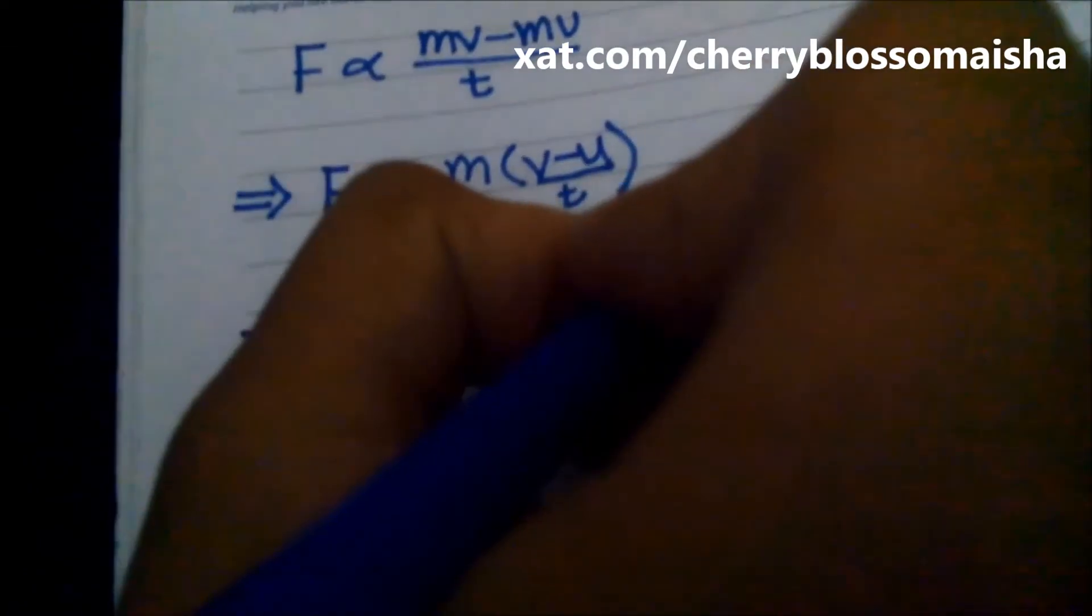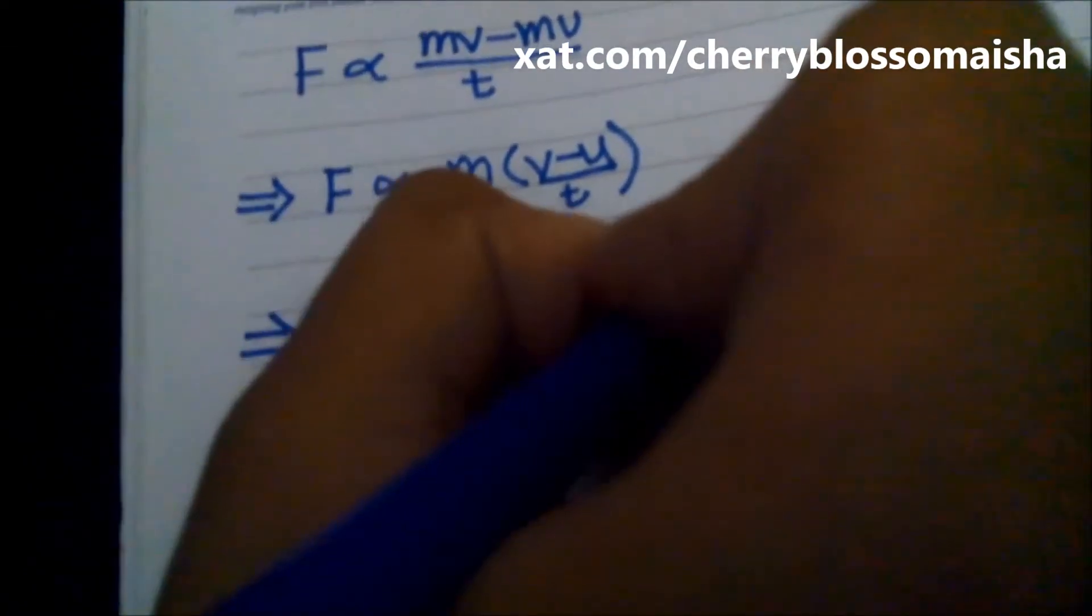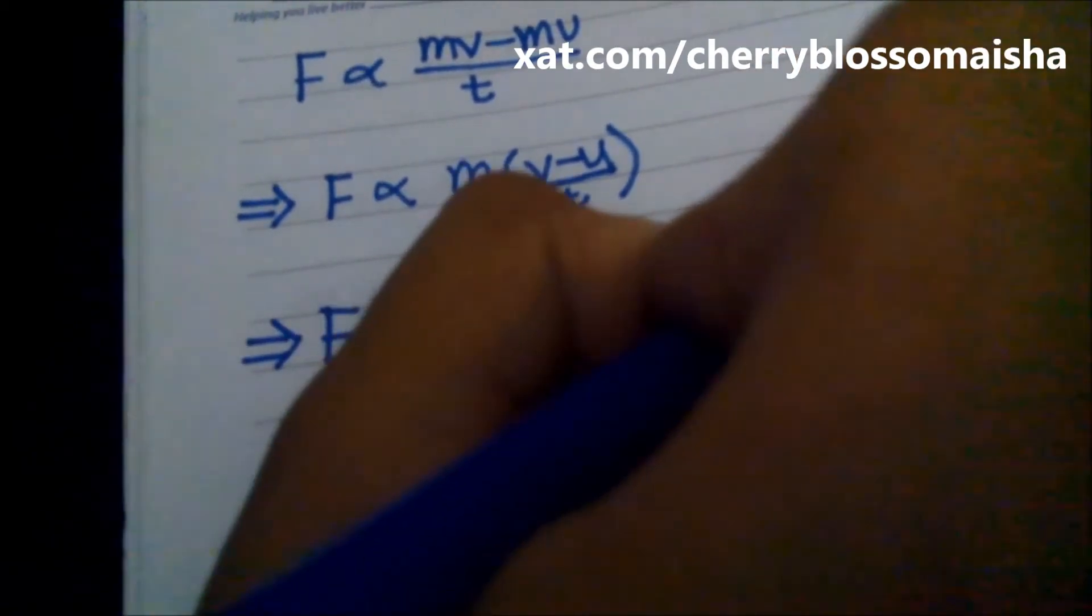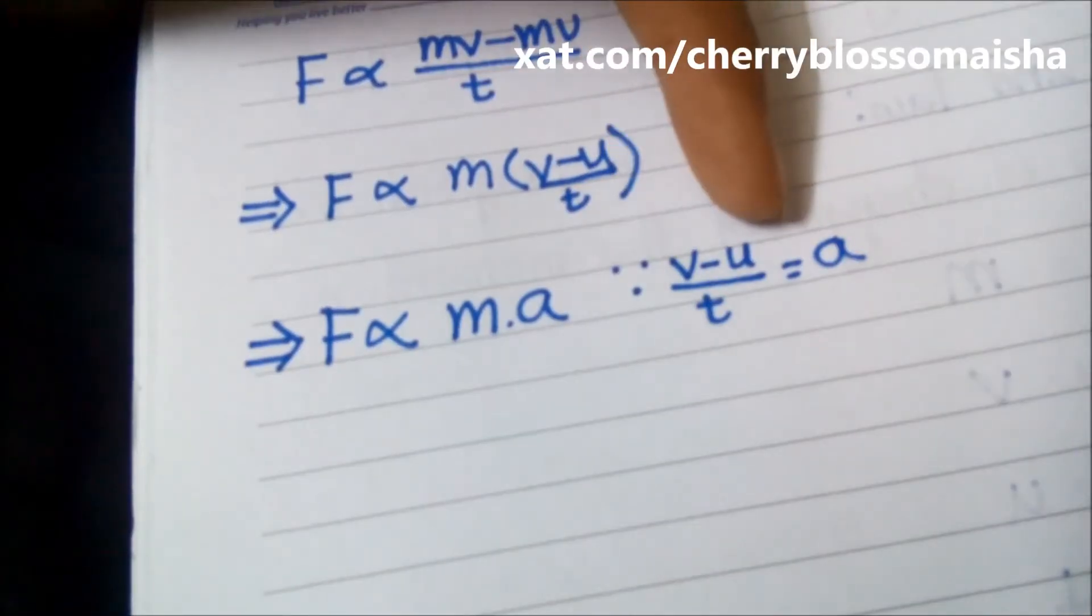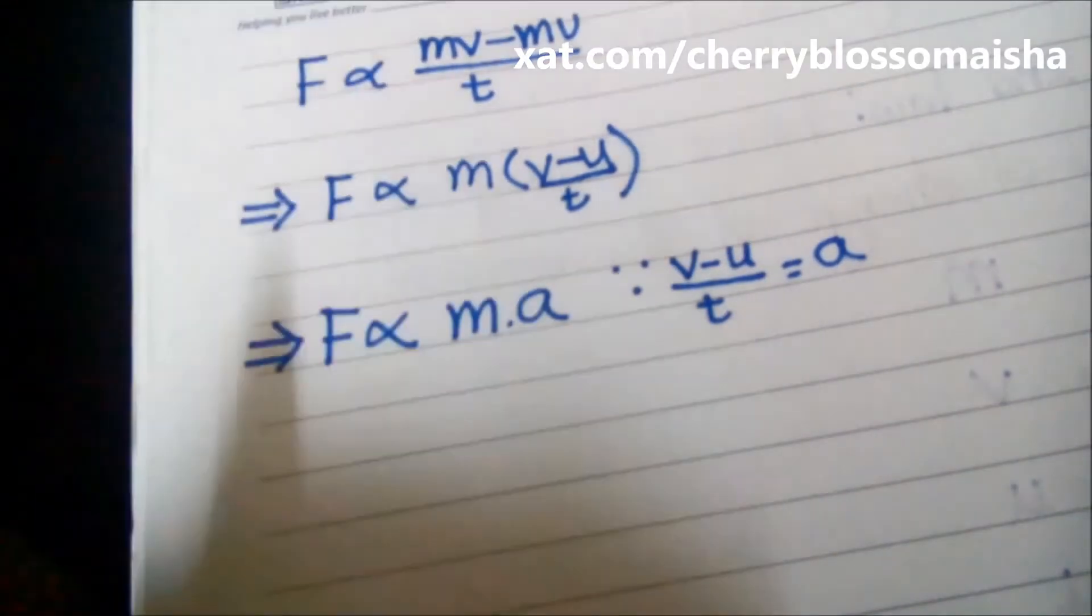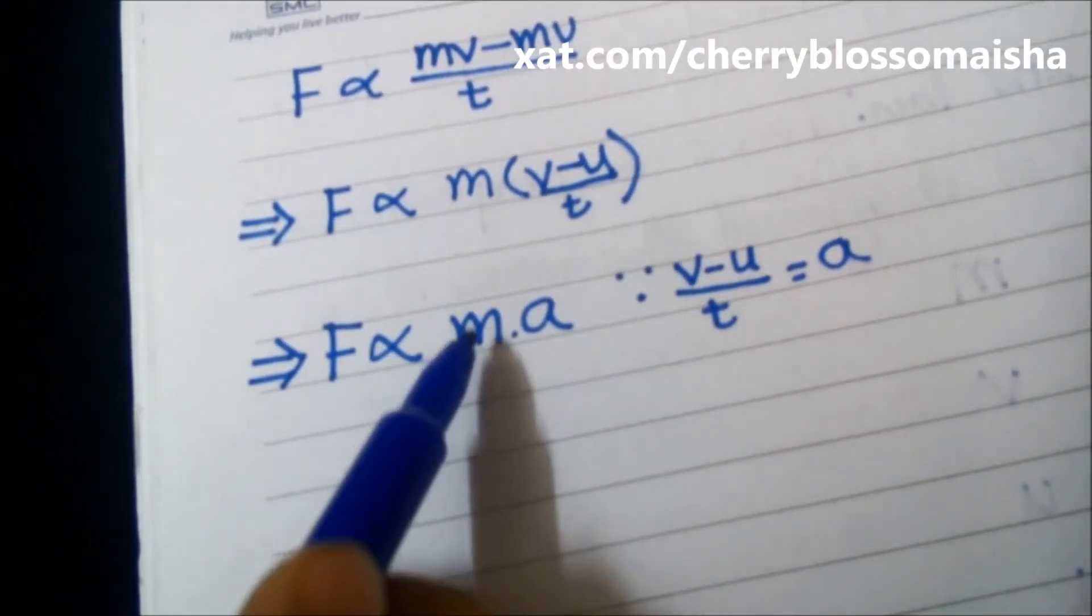So how did we get a? Because we know that final velocity minus initial velocity divided by time is equal to acceleration. That's how we get F is proportional to M a.